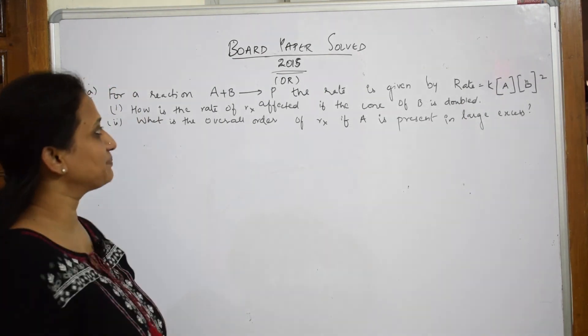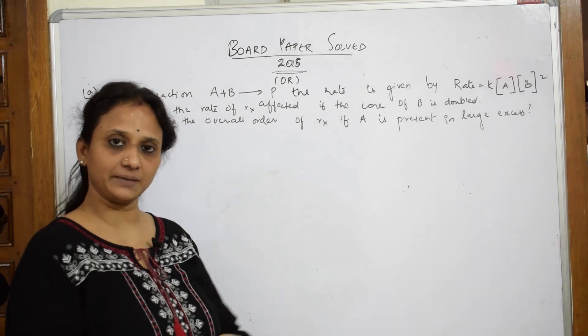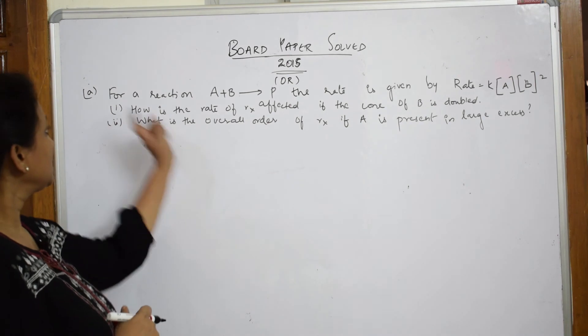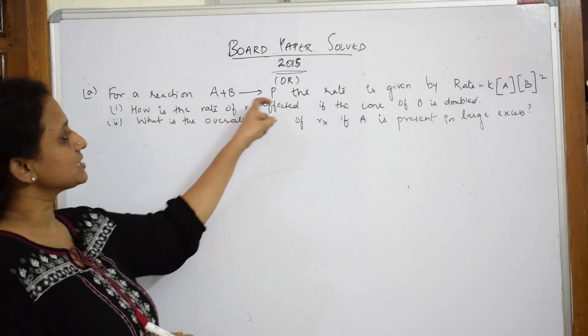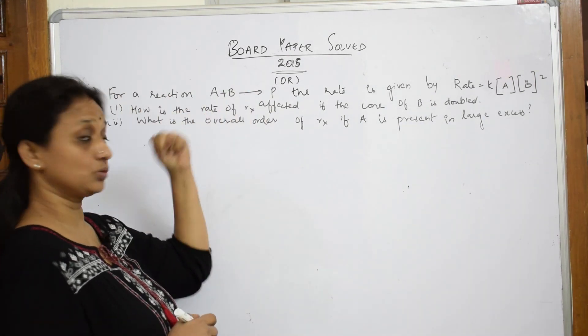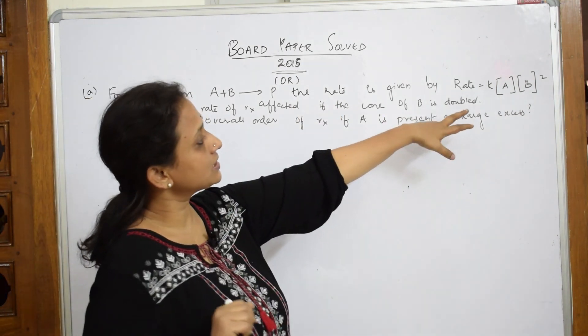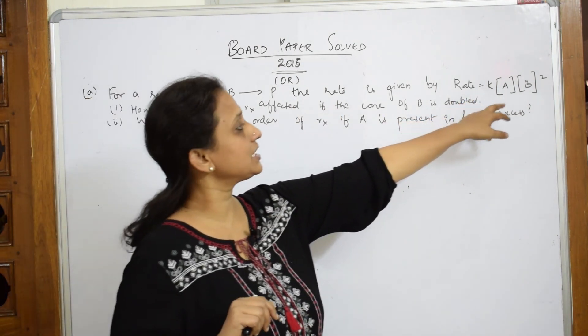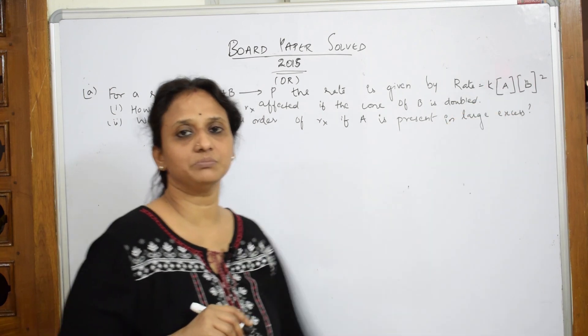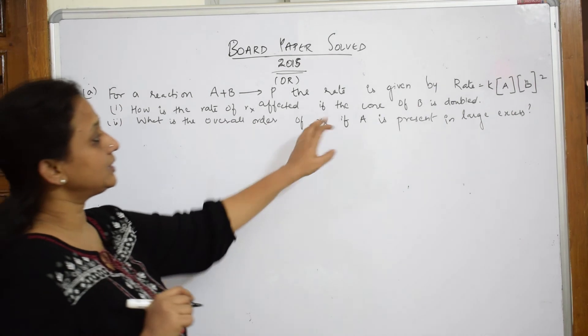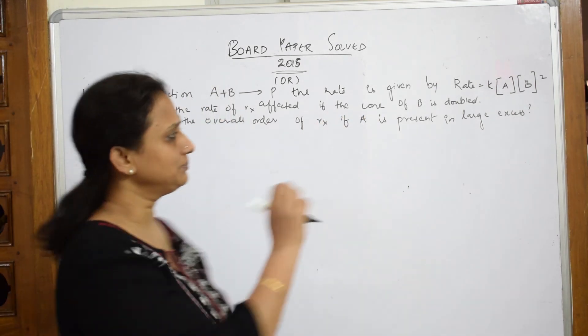Let us come back. This is actually 2015 paper only, but it is a choice question given in 2015. Let us read the question and solve it. For the reaction A plus B is giving me products, there are two reactants here. Then the rate is given by rate equals K into concentration of A and into B squared. How is the rate of the reaction affected if the concentration of B is doubled? Simple question, let us see.